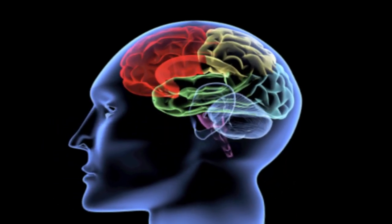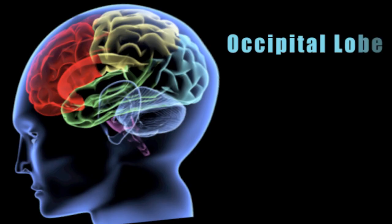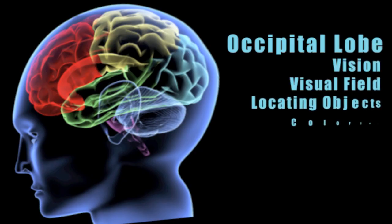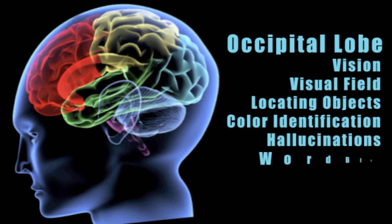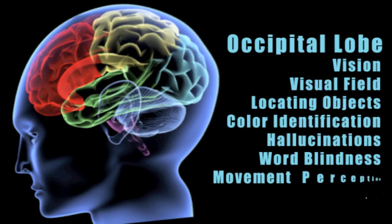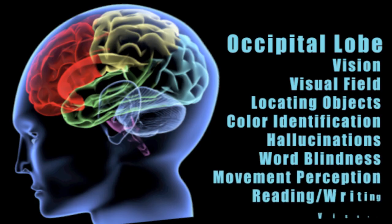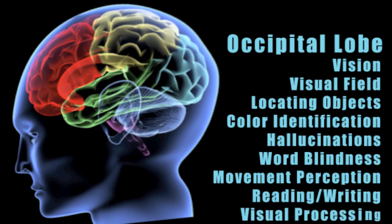When I see a client who has damage in the occipital lobe, I see issues of vision defects — loss of the visual field, problems visually locating objects, and problems identifying colors. People can have distorted vision, hallucinations, and something called word blindness. There's an inability to perceive the way objects move, problems with reading and writing, and an overall slowed processing of visual information.